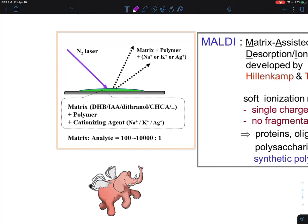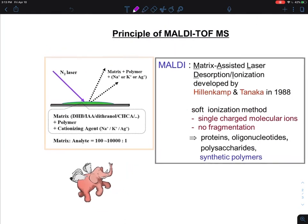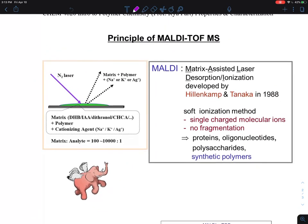Whatever comes out, you can collect it in the mass spectrometry tube and then see how much of the charge to mass ratio can be measured.